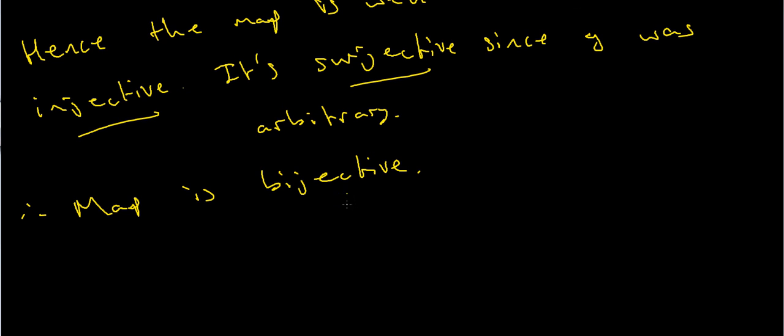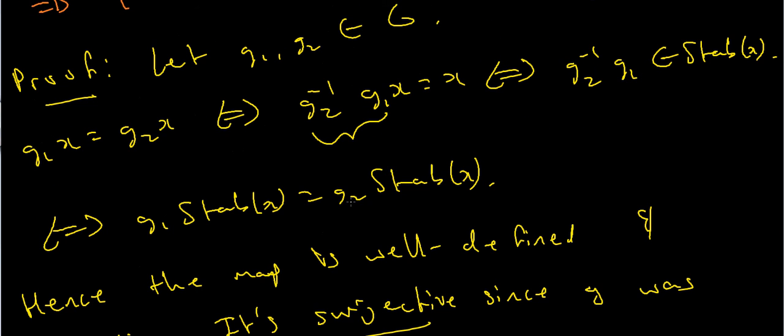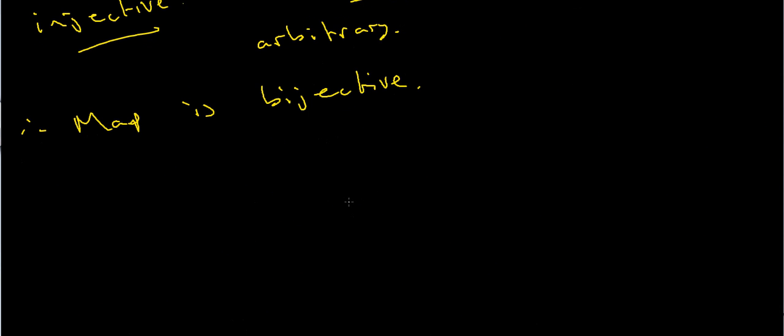And since the map is bijective, then as I previously stated, that means I can compare the size of these two things and make the following conclusion. So the conclusion is that the size of G is equal to the size of the stabilizer of X times the size of the orbit of X.